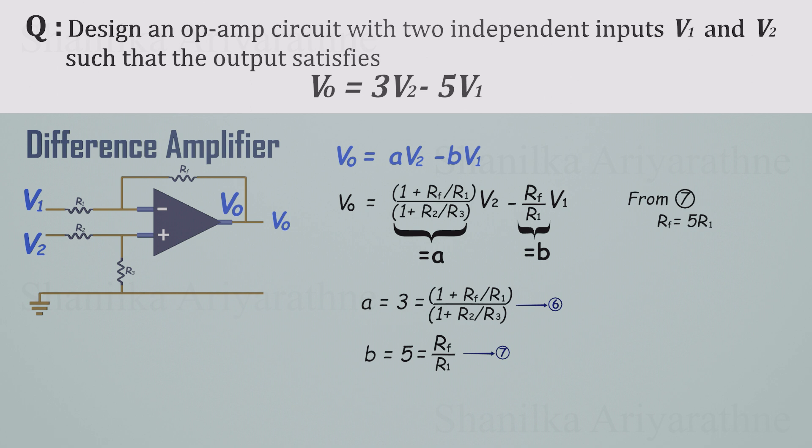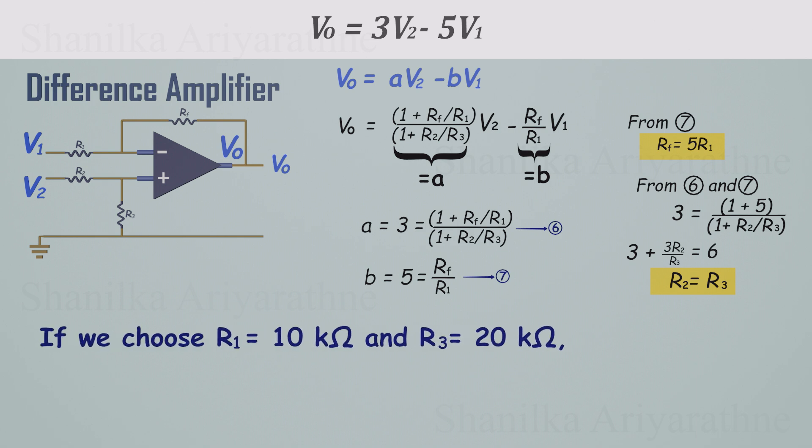From equation 7, RF equals 5 times R1. Now substitute that into the expression for A. When you solve it, you get R2 equals R3. So the final design rules are simple. RF equals 5 times R1 and R2 equals R3. It's really that easy. Pick convenient values that satisfy those ratios. Choose R1 and R3 first, then compute RF and R2 from the rules. For example, take R1 as 10 kOhms and R3 as 20 kOhms. You can pick other values, but it's smart to stay in the practical range of 10 kOhms to 100 kOhms. With those choices, RF becomes 5 times R1, so 50 kOhms, and R2 equals R3, so 20 kOhms. And that's it. With those resistor values, the circuit's output is exactly 3 times V2 minus 5 times V1.